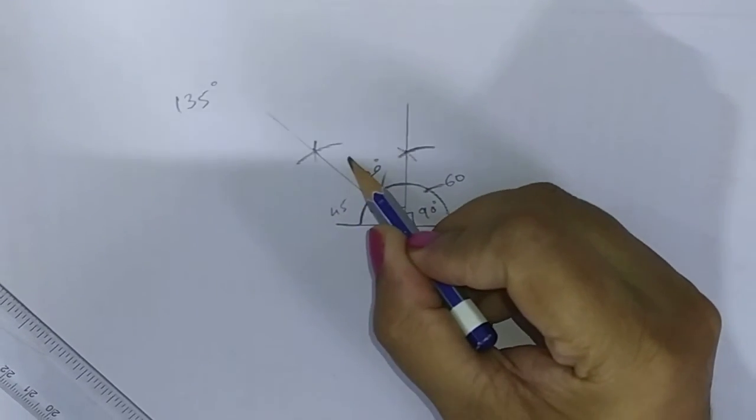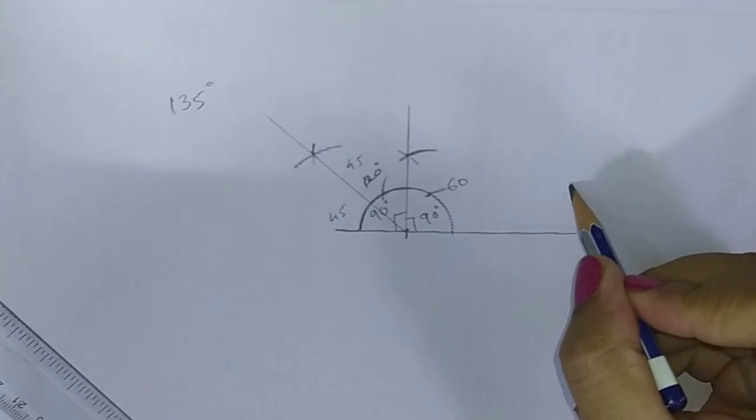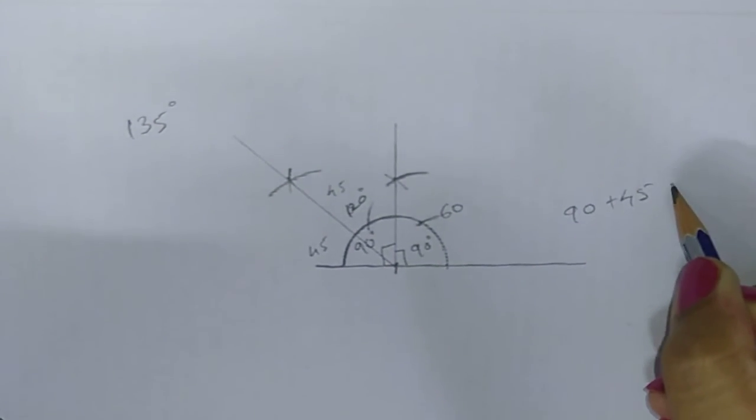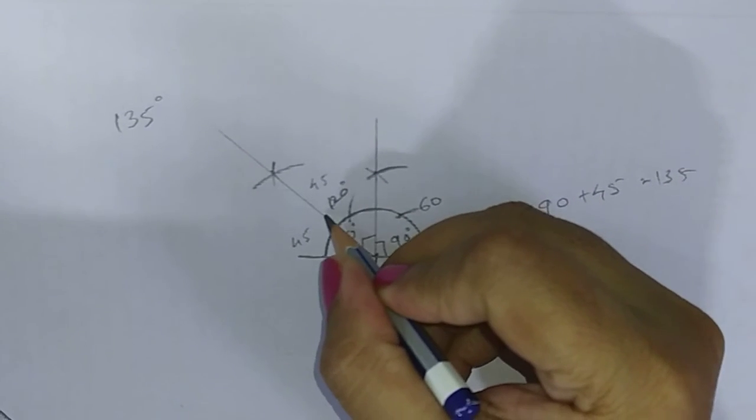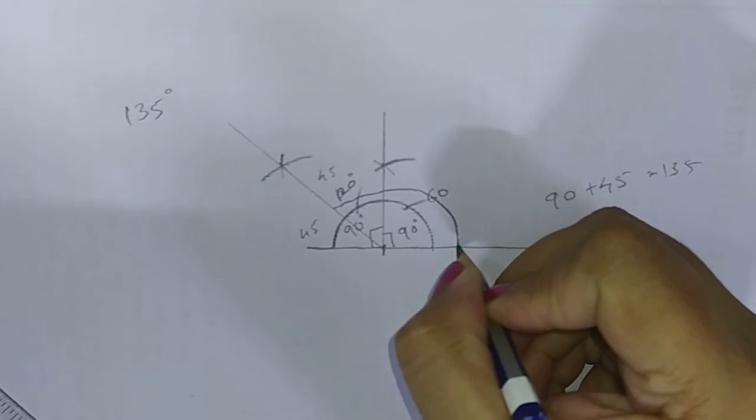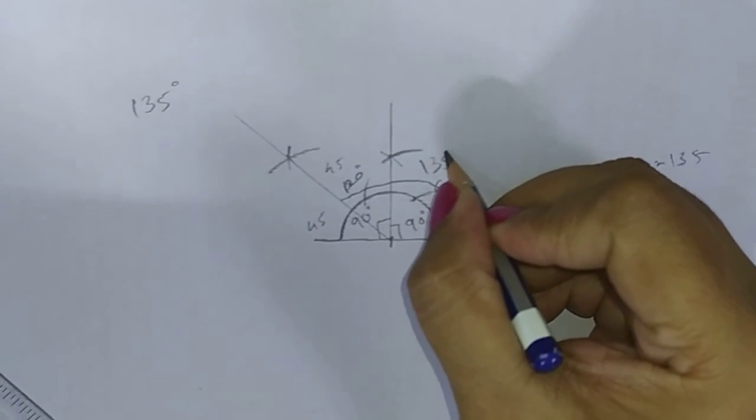So your 90 plus 45, you get 135. So this is the required angle, this is the required angle, 135 degrees.